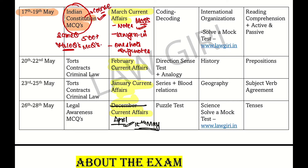For current affairs, you don't know what will come — there is always risk. After that, coding and decoding is very important. Coding and Decoding, Direction Sense Test, Analogy, Series, Blood Relations, and Puzzle Test — including Sitting Arrangements and Table Questions — are very important. These two types of questions you can solve in three days.